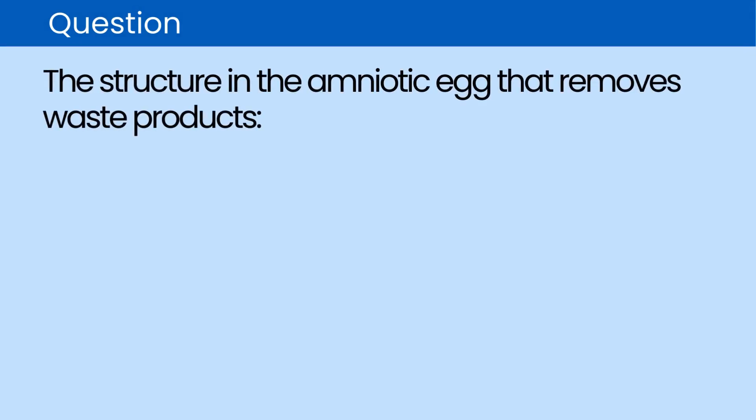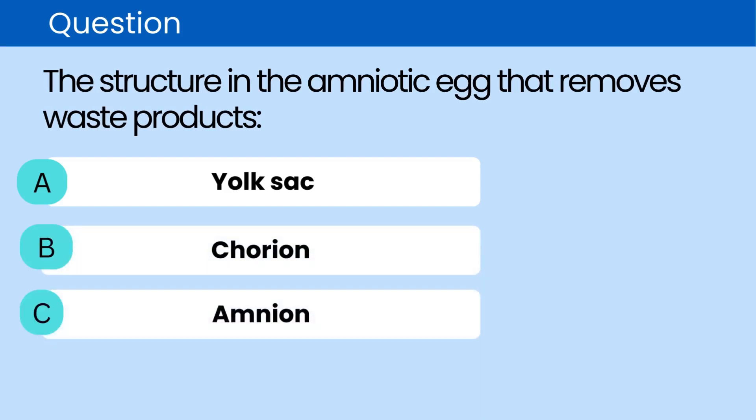Question. The structure in the amniotic egg that removes waste products. A. Yolk sac. B. Chorion. C. Amnion. D. Allantois.